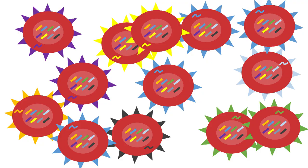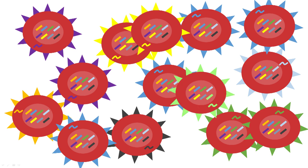For the first time, we were able to quantify how rapidly this process occurred, and we found that every parasite life cycle, around 1 in 500 parasites will have undergone recombination to produce new var genes.